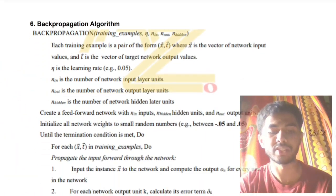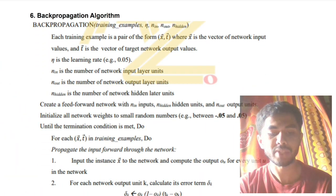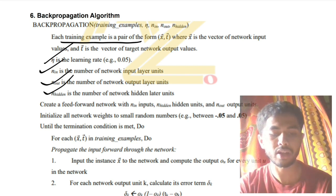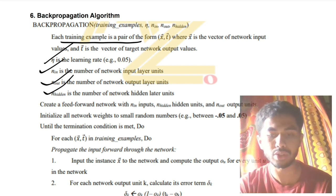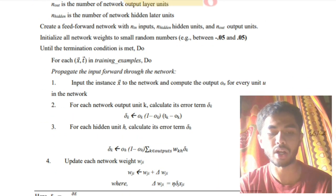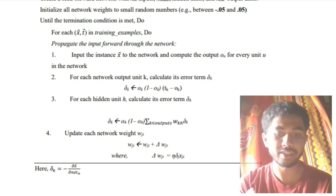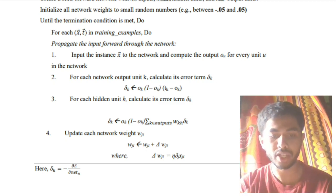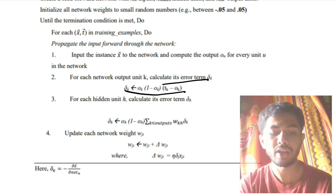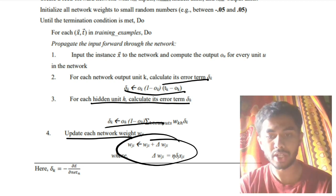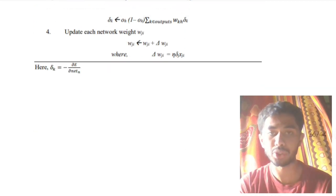After writing the diagram and explanation, write the algorithm: each training example is considered; n is the learning rate; variables for network input, output, and hidden layer values are defined. Assign initial values to training examples, find the errors, and if the error is large, update the values. To update: calculate the error term using the given formula, for each hidden unit update the network using the update formula, then find the output values again. Repeat until convergence. This question marks the end of Module 3.